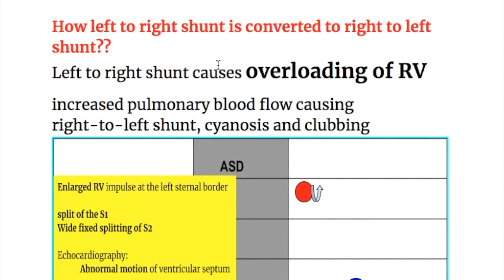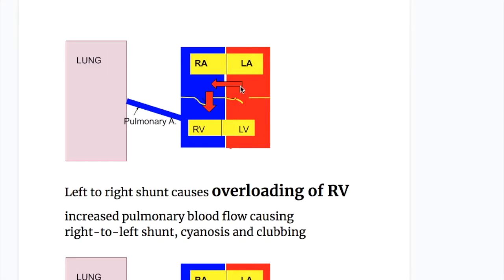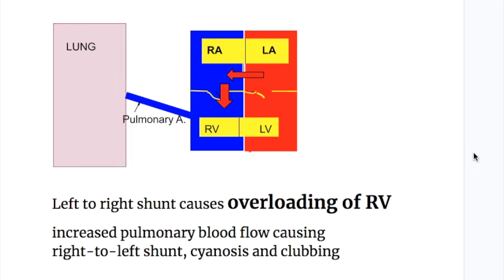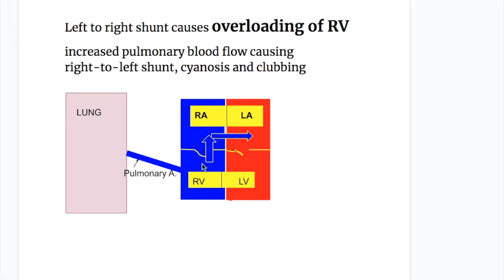How left to right shunt converts to right to left shunt: left to right shunt causes overloading of the right ventricle. Oxygenated blood from the left atrium passes into the right atrium through the atrial septal defect because left atrial pressure exceeds right atrial pressure. The blood then goes to the right ventricle and through the pulmonary artery to the lung. When pulmonary arterial pressure rises, it causes right to left shunt, sending deoxygenated blood back into the left atrium, mixing with oxygenated blood and causing cyanosis and clubbing.